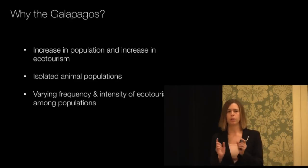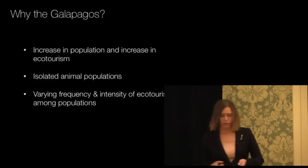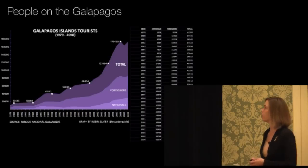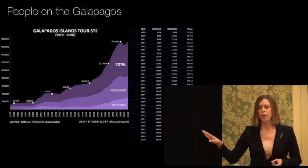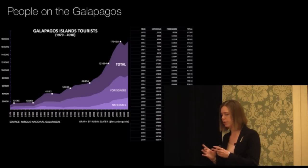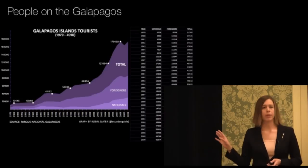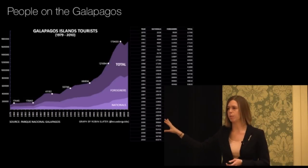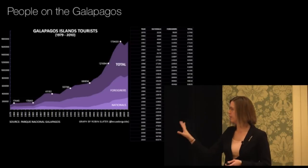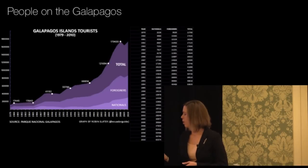Across these populations, some come into contact with hundreds to even up to a thousand people daily, whereas others never see people at all. And we're talking about populations that are less than a kilometer apart on the same coastline, similar size — so it's really this perfect natural experiment. Ecotourism is increasing at astounding rates. We're up to as of about 2010, 180,000 people a year. These are very concentrated exposures that these animals are getting. And we're also seeing an increase in population growth on the islands as money from ecotourism goes into the Galapagos.